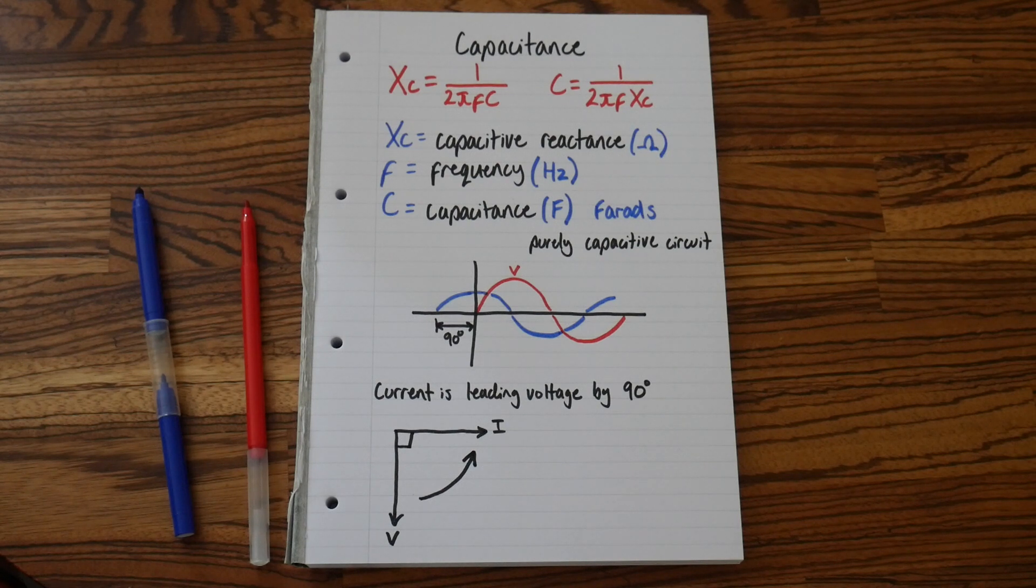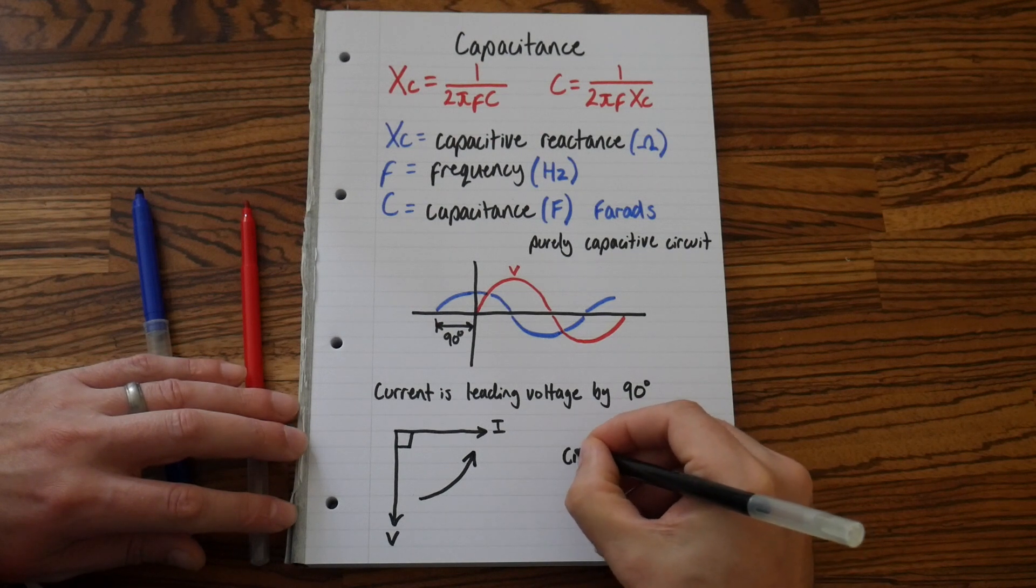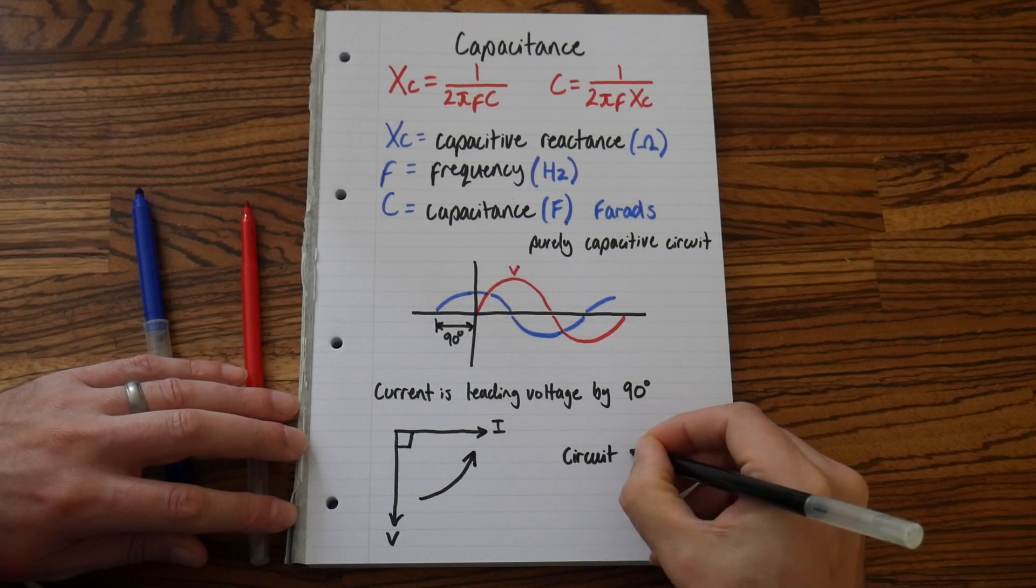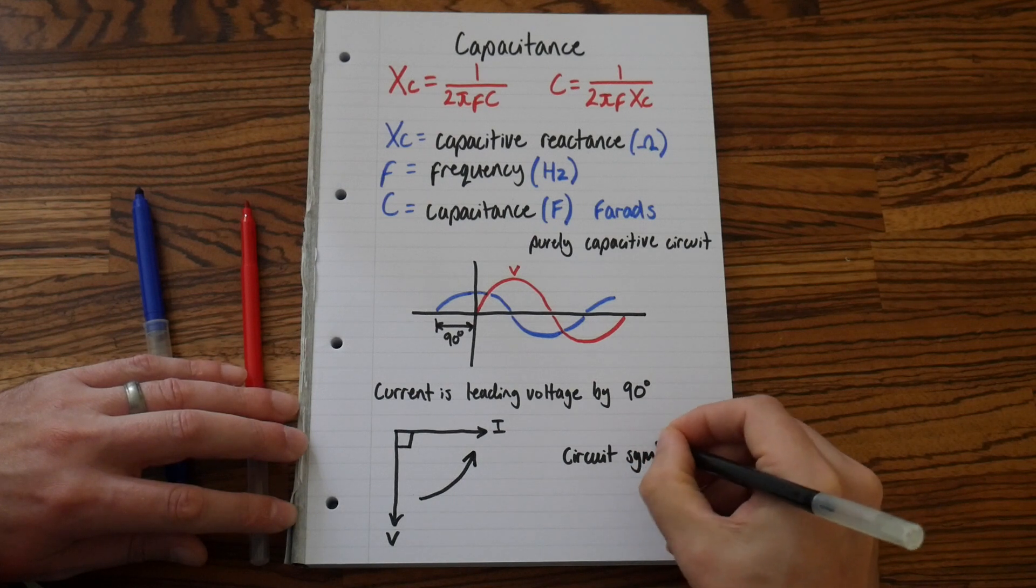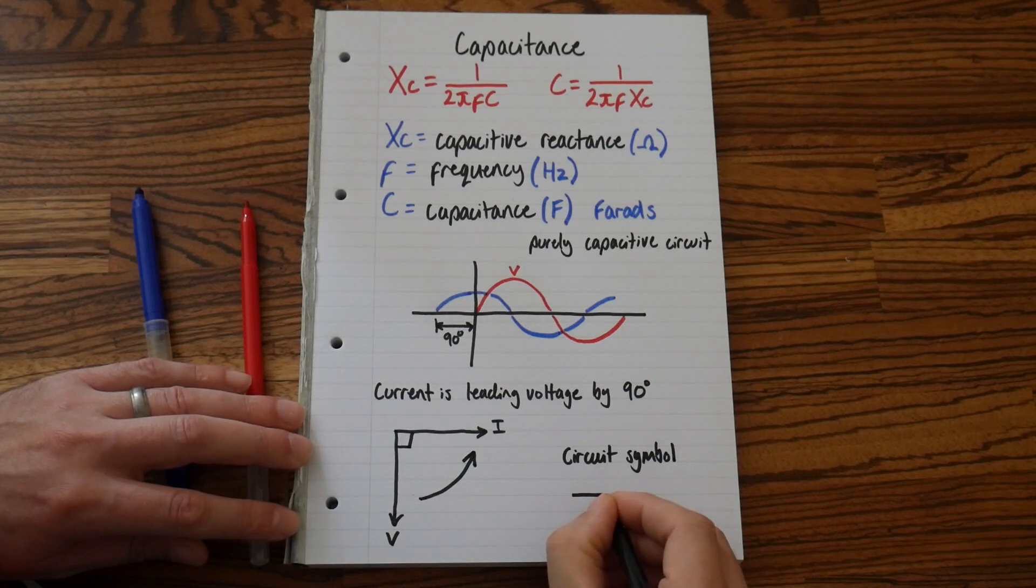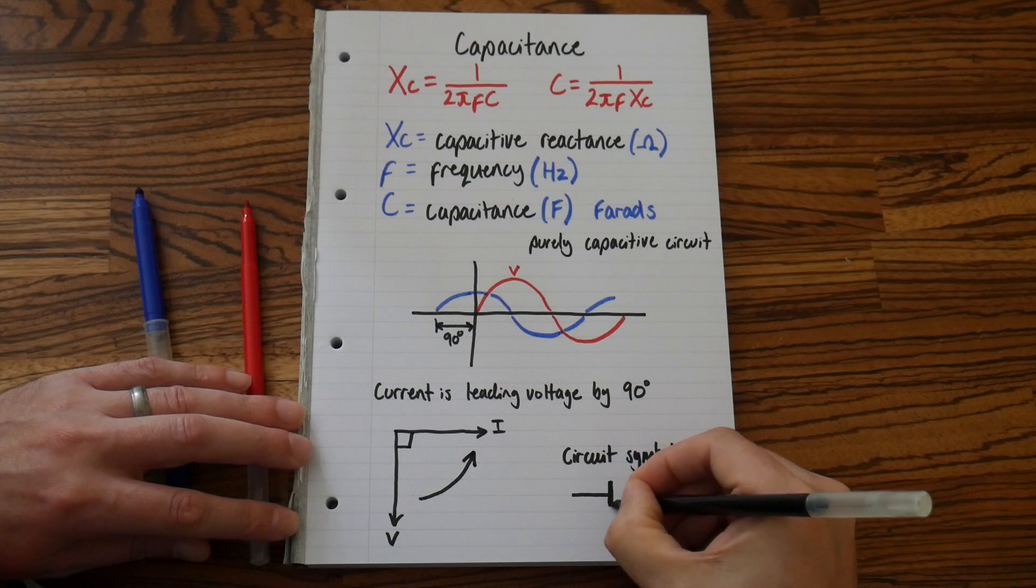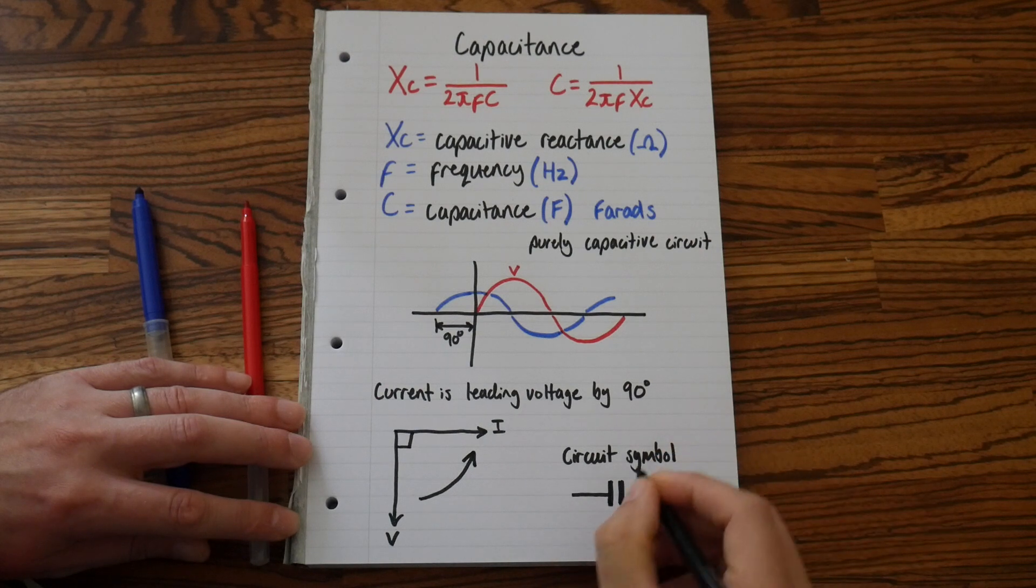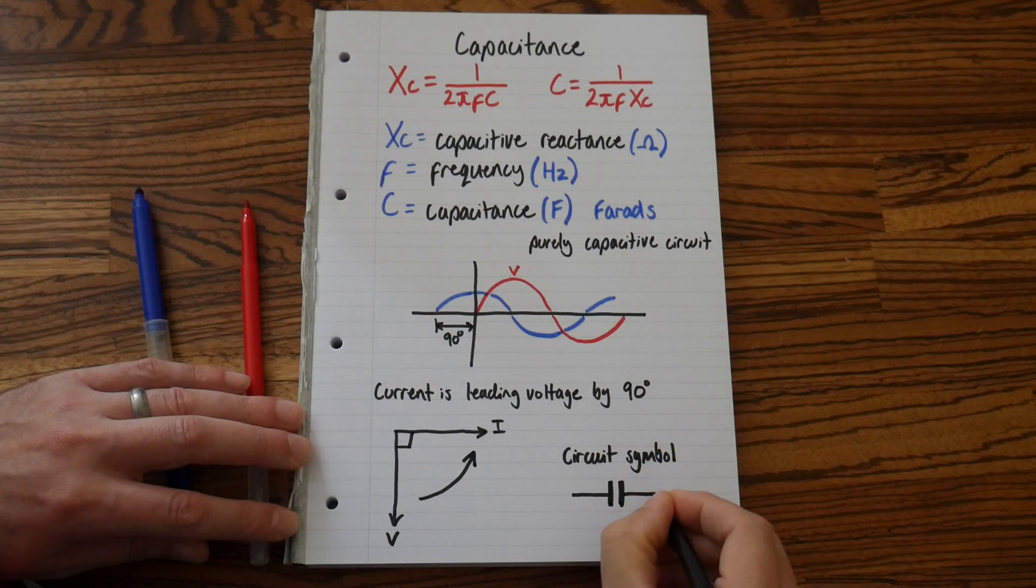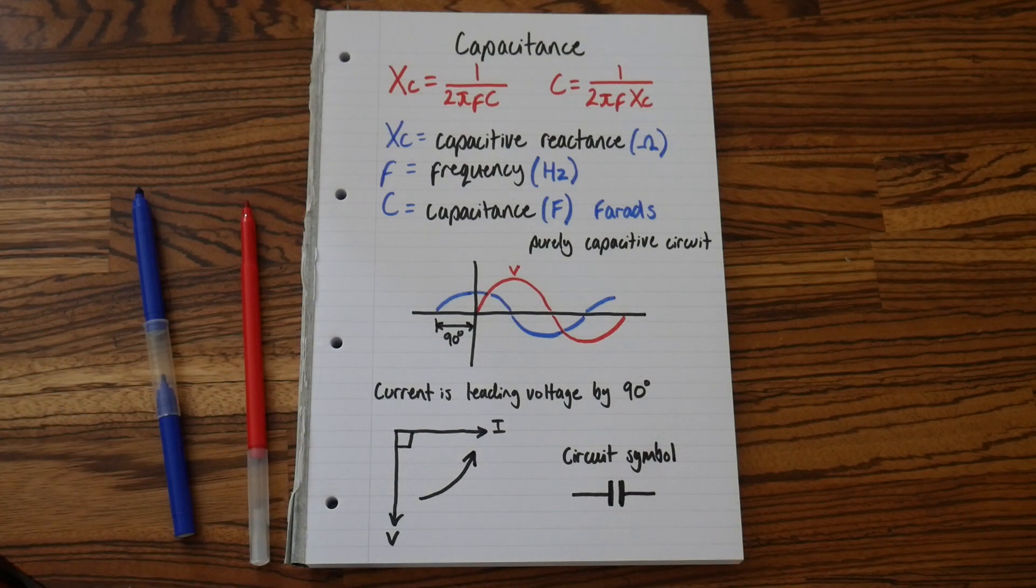And lastly, just for our notes, we'll do the circuit symbol. So the circuit symbol for a capacitor is equal sized, thick bold lines. And that is the circuit symbol for capacitance.